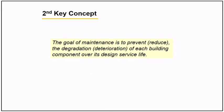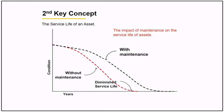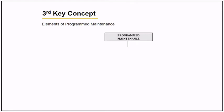The second concept is that the goal of maintenance is to prevent deterioration of each asset over its design service life. The service life of an asset is presented in this graph, showing its condition over time. The red dotted line goes down without maintenance and diminishes over time. However, the impact of maintenance on the service life of an asset extends the service life, with potential service life increase.